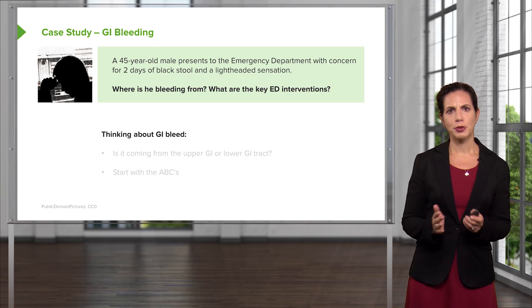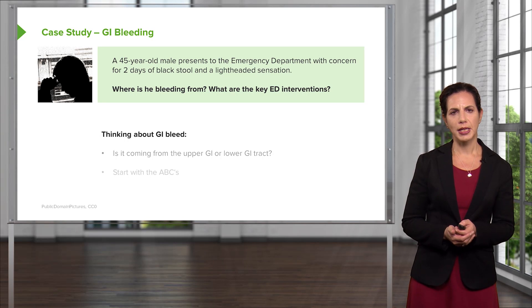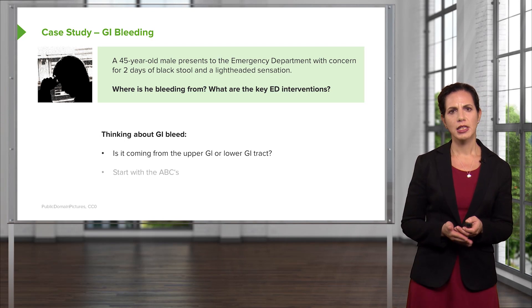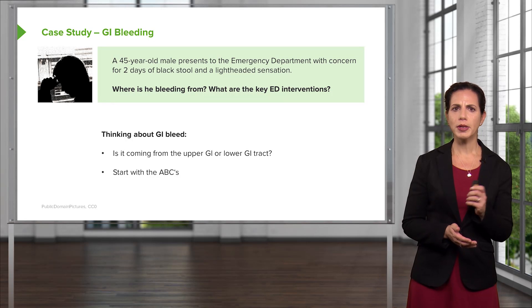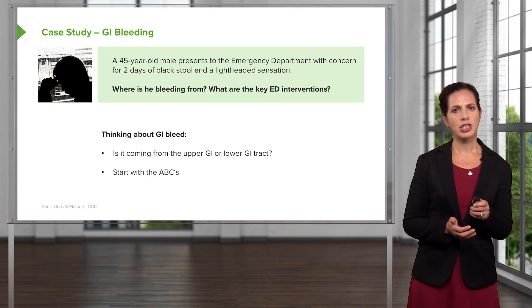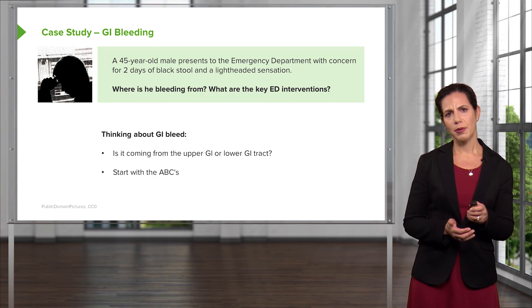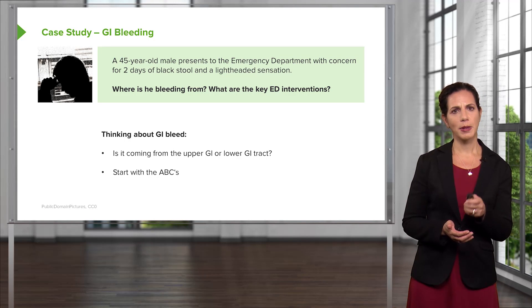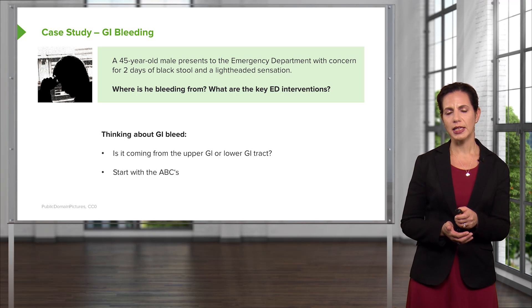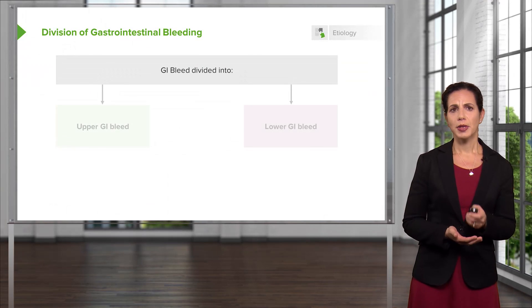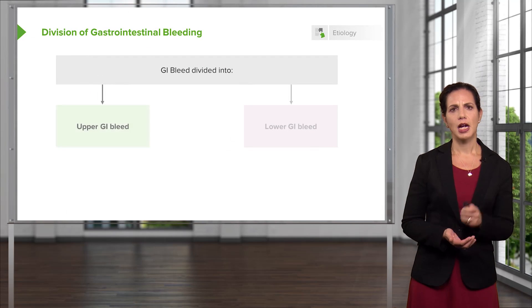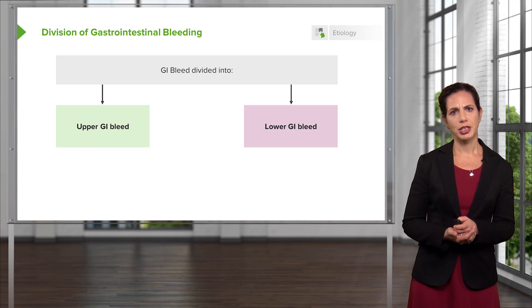When we think about patients who present to the emergency department with GI bleed, we divide bleeding into the upper GI tract or the lower GI tract. It's important to remember that we always start with our ABCs. In situations of GI bleeding, for A and B, make sure the patient has a patent airway and that they're breathing okay, and especially in a situation of bleeding, focus on the circulation component. We divide GI bleeding into upper and lower GI bleeding.